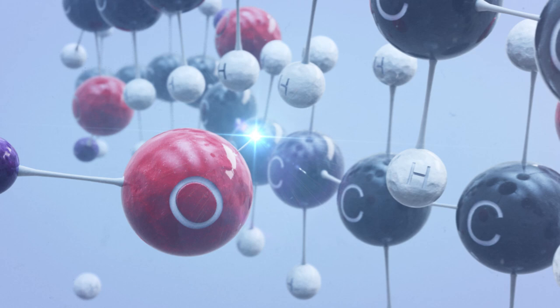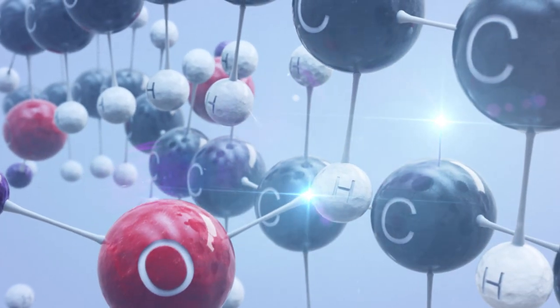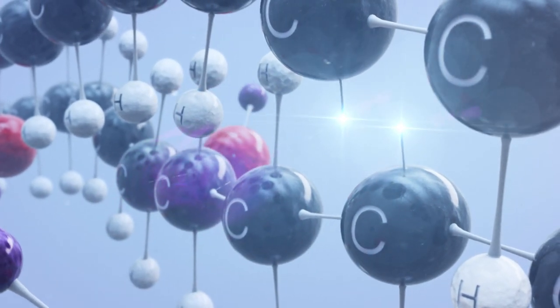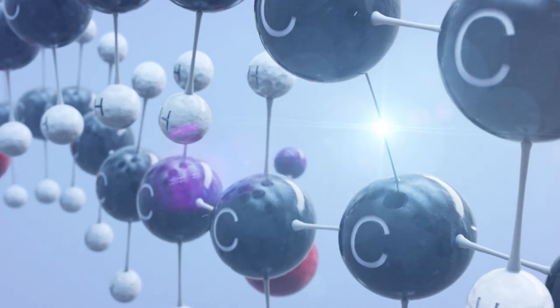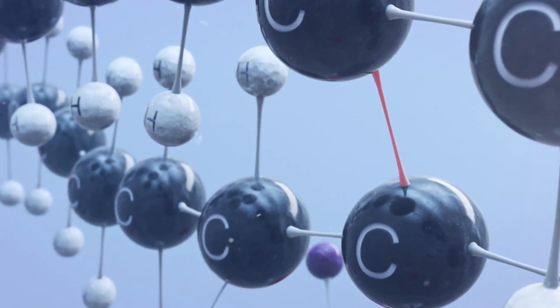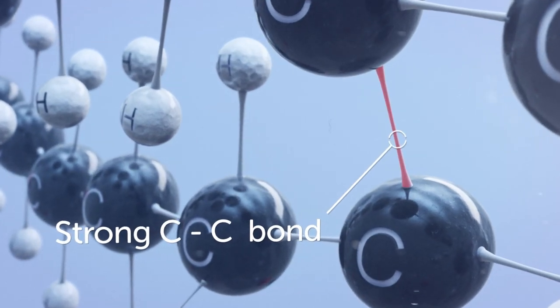The radical abstracts a hydrogen atom from a polymer chain, forming a new radical on the polymer itself. When it finds a radical on another polymer chain, they recombine and form a strong crosslink.